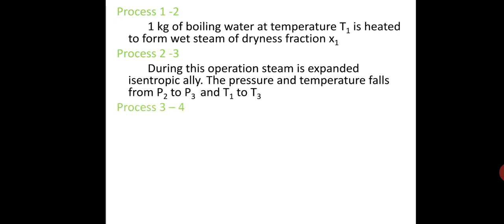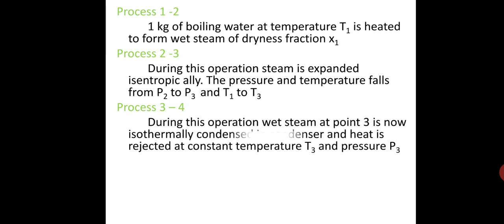Process 3 to 4: During this operation, the wet steam at point 3 is now isothermally condensed in the condenser, and heat is rejected at constant temperature T₃ and pressure P₃. It means that temperature T₄ and pressure P₄ is equal to temperature T₃ and pressure P₃ respectively. This isothermal process is represented by the curve 3 to 4.